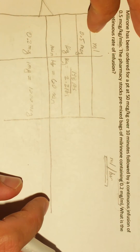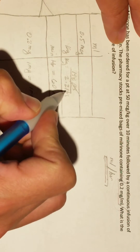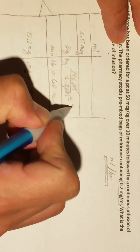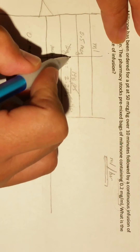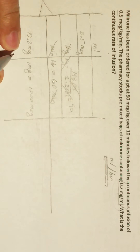Now we cancel our variables. Pounds cancels with pounds. Then 198 divided by 2.2 equals 90 kilograms — kilogram cancels with kilogram. Minutes cancel with minutes.